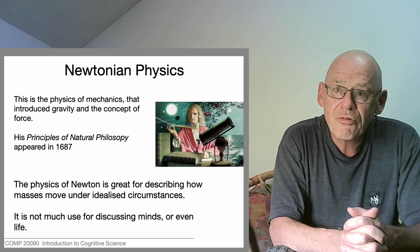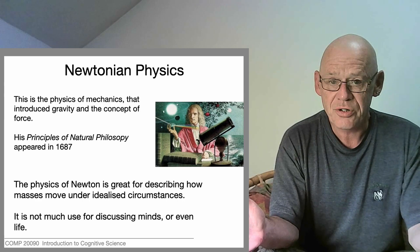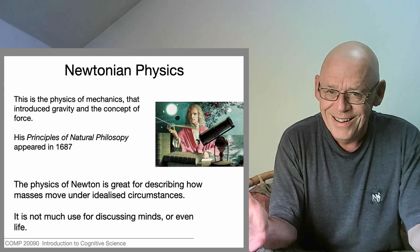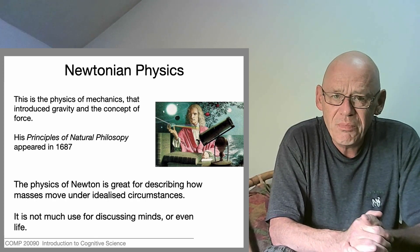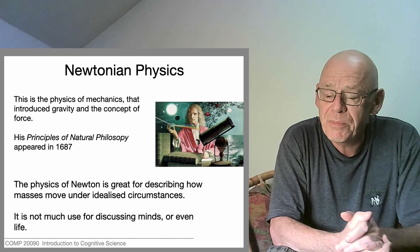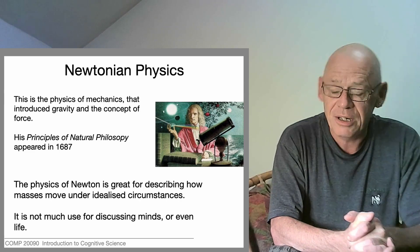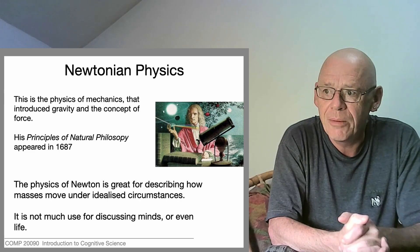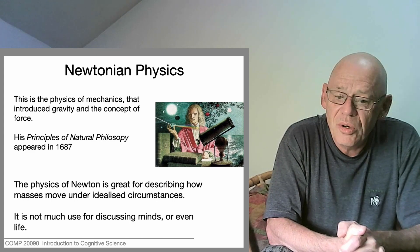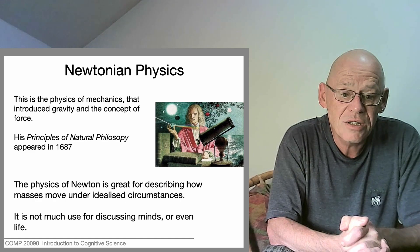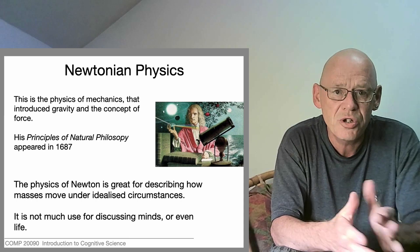Newton did a lot more besides physics. As well as writing the book on physics and optics, he was also a very interesting character whose greater interest lay in alchemy and in biblical prophecy. The physics that he blessed us with reigned from about 1700 up to the start of the 20th century when it was overthrown and replaced with modern physics.